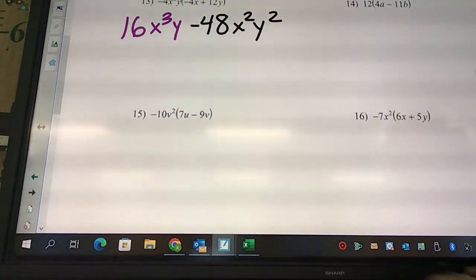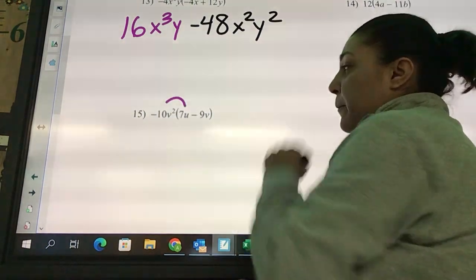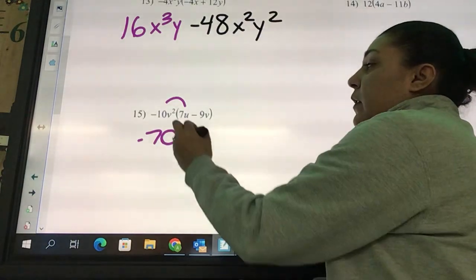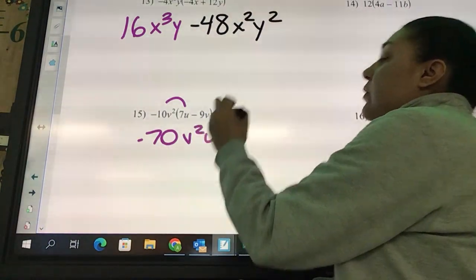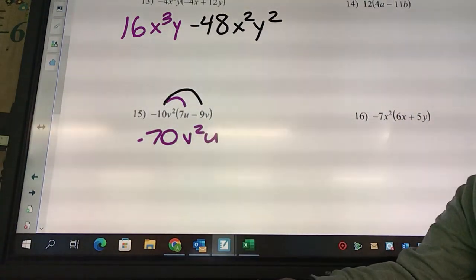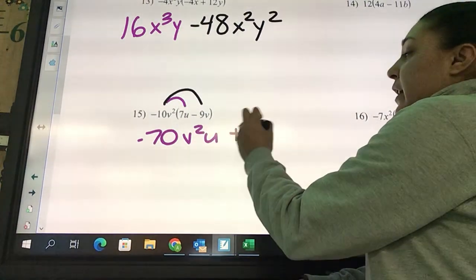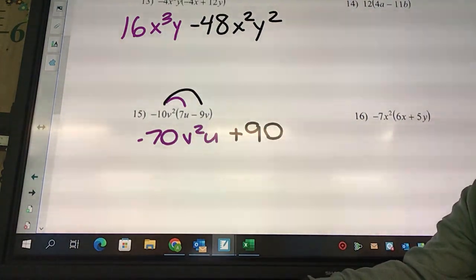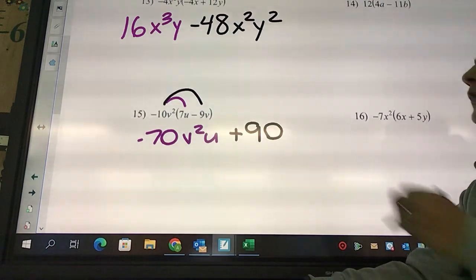Problem 15. I got negative 10 times 7, negative 70, v²u. Negative 10 times negative 9 is positive 90. What's my letters going to be? v³.